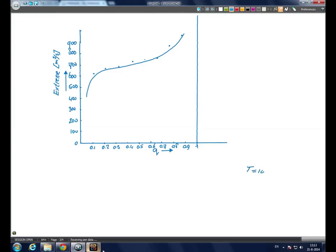T is 100 years. T is 100, P is 1 over 100, and Q is 0.99.